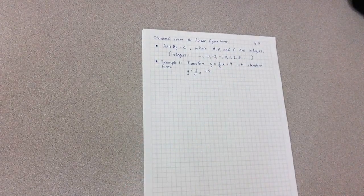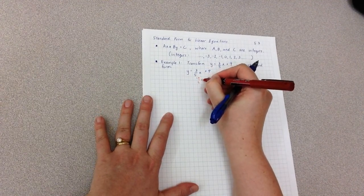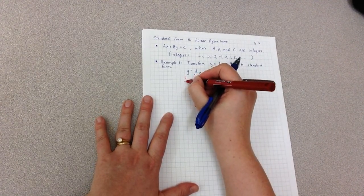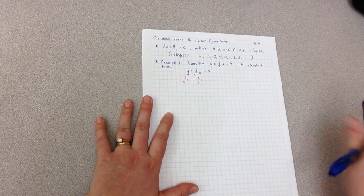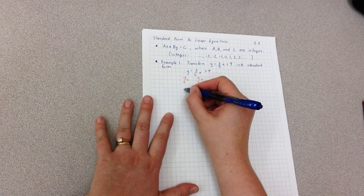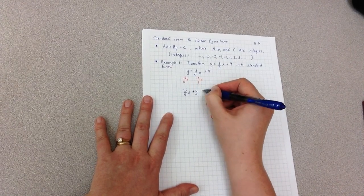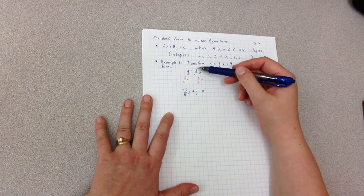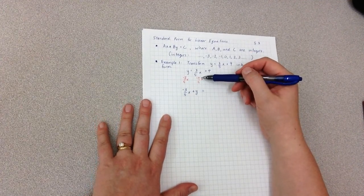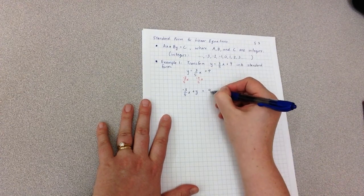And then I'm going to move my 3/5 over, so I do that by subtracting 3/5 x from both sides. Now of course on this side these aren't like terms, so I leave it as negative 3/5 x plus y equals. And on this side, the whole point of subtracting by 3/5 x is to cancel this out, so I get 9.